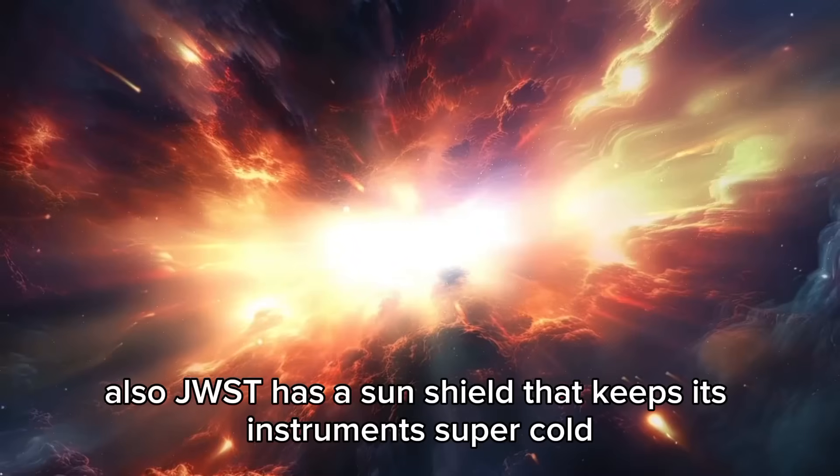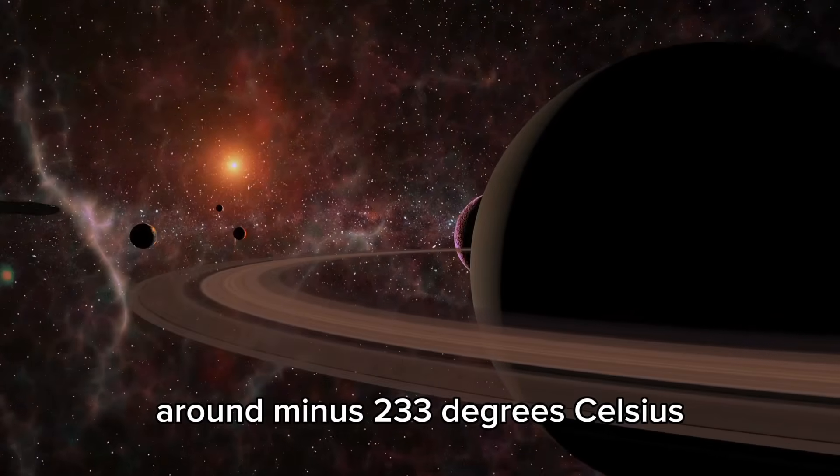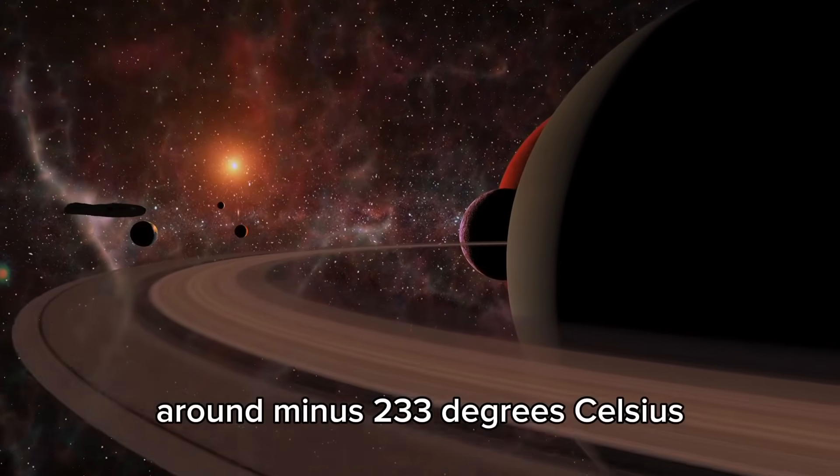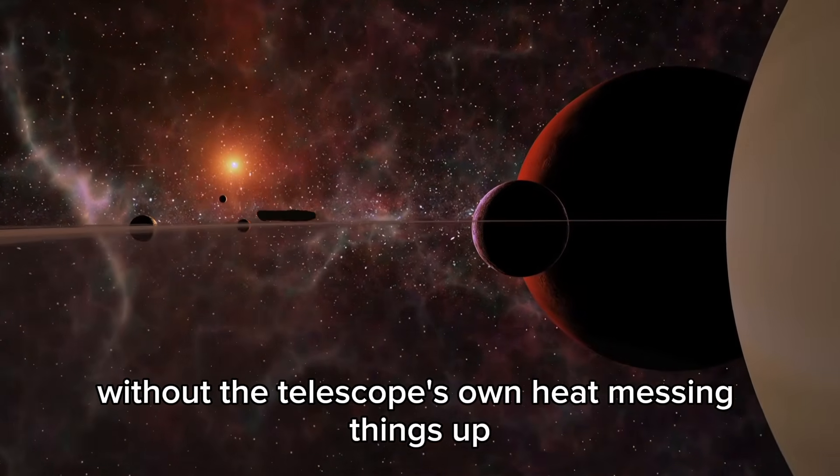JWST has a sun shield that keeps its instruments super cold, around minus 233 degrees Celsius. This is important for seeing faint infrared signals without the telescope's own heat messing things up.